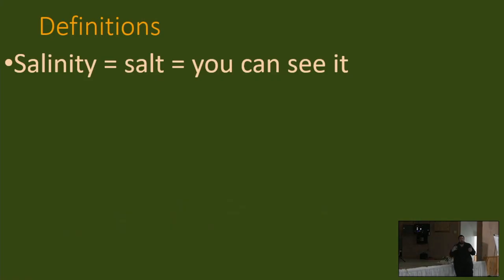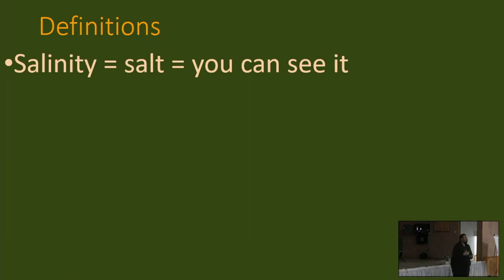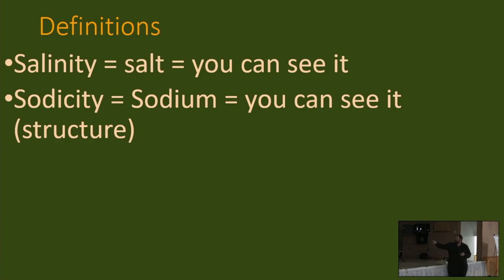First, I want to throw out a handful of definitions. We hear about salinity, sodicity, alkalinity — what are we talking about? Salinity is about salt — that's the white stuff we usually find in lower, wetter areas of the field. Sodicity means you have too much sodium in the soil, and it makes the soils hard and compacted.